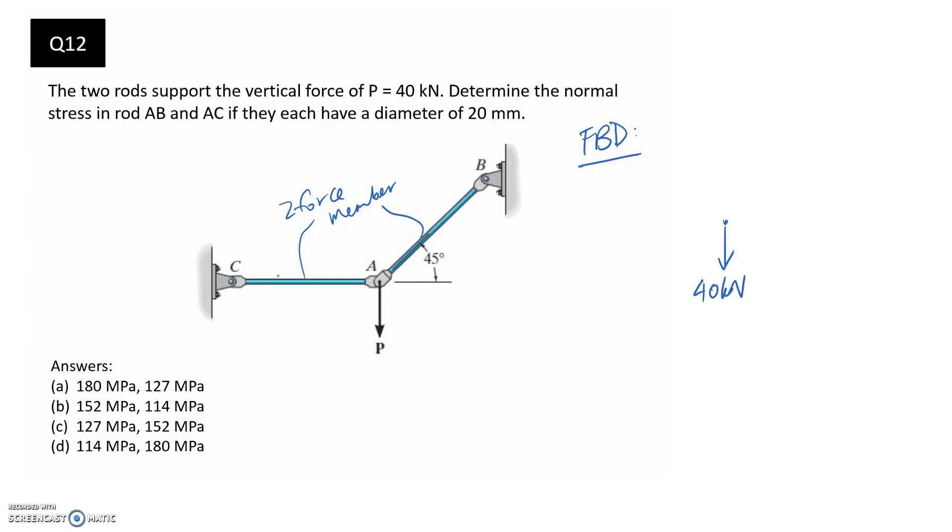There's no other forces or moments applied through the center of these members. So definitely two force members. We know that when they're straight, the direction of the force is the direction of the member. So this here is at 45 degrees. We can mark that in, and I'll call it FAB for the internal force there. And this one's horizontal, so I'll call it FAC.